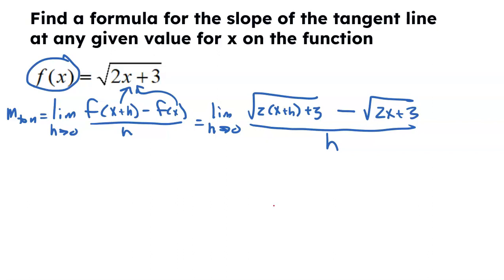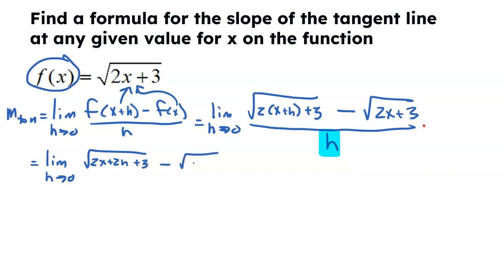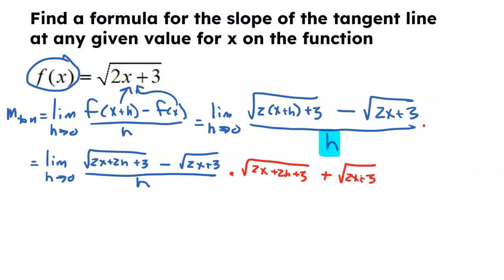Now I'm stuck. I need this H in the denominator to cancel. We're going to do something you probably saw in part one — multiply by the conjugate. I am going to multiply by the conjugate, but let me clean this up a little bit first. Using my algebra skills, inside that square root we have 2X plus 2H plus 3. Now I'm going to multiply by the conjugate: square root of 2X plus 2H plus 3 plus the square root of 2X plus 3. But I can't multiply the numerator unless I also multiply the denominator by the same thing: square root of 2X plus 2H plus 3 plus the square root of 2X plus 3.